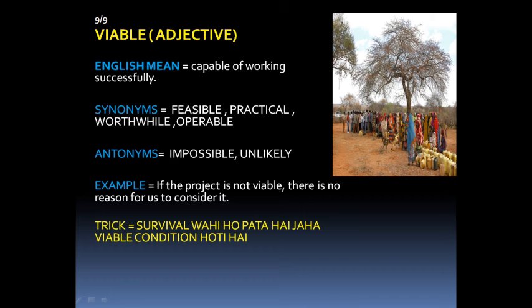The next word is 'Viable.' Viable means a practical condition where you can work easily. If you have a feasible or practical condition, it is viable. The important synonym of viable is feasible. The antonyms of viable are impossible and unlikely — unlikely is a very important antonym. Example: 'If the project is not viable, there is no reason for us to consider it.' Memory trick: survival is only possible where viable conditions exist — viable and survival rhyme, so where feasible conditions are, a person can survive.